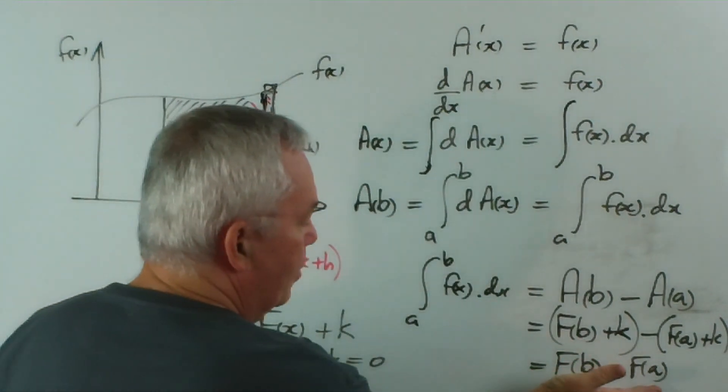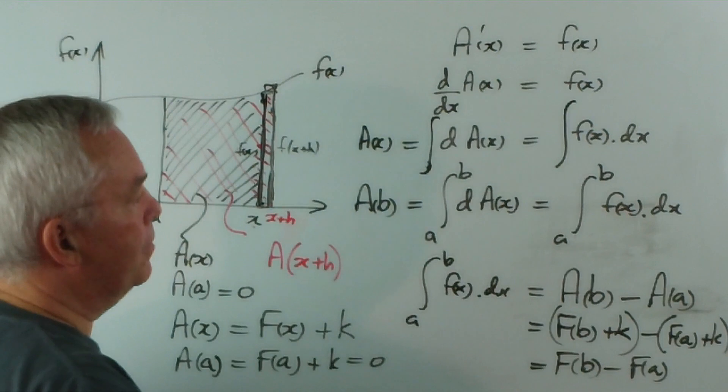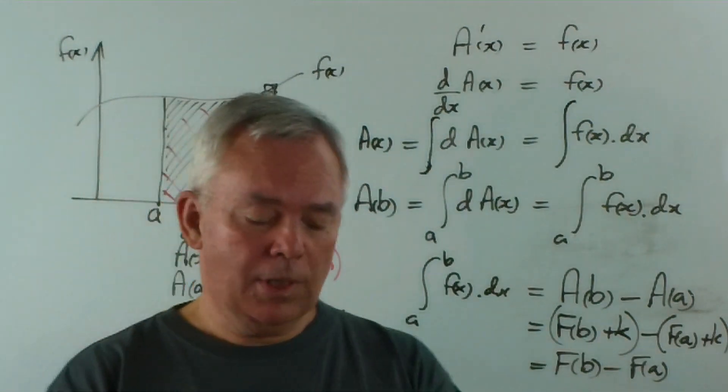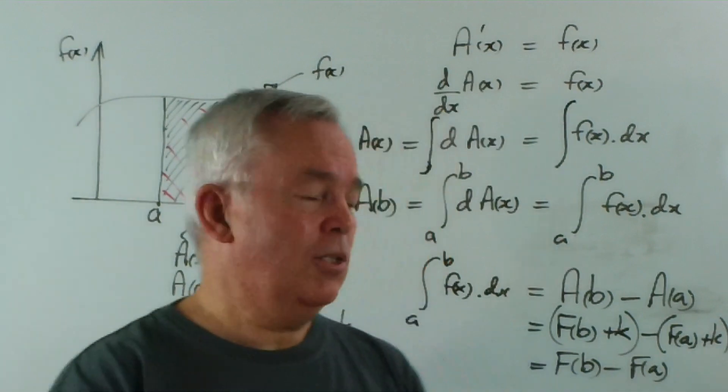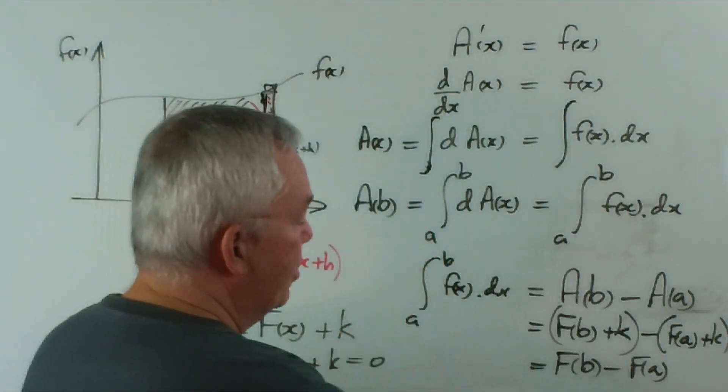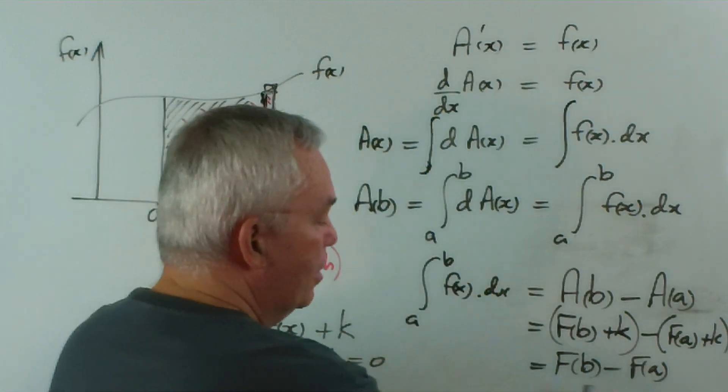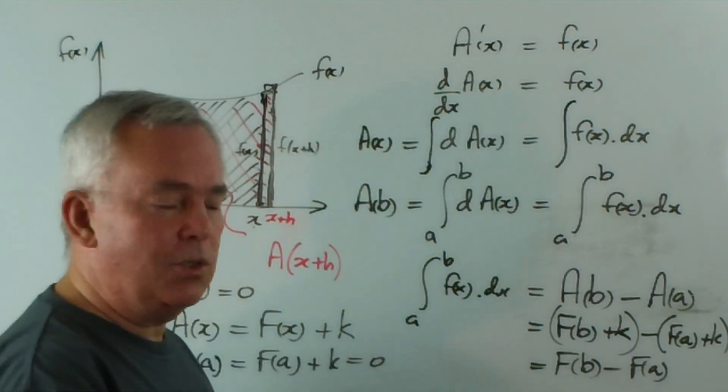A also is an antiderivative, but we're pointing out the fact that the constant makes no difference. So this is the second part of the fundamental theorem of calculus. So it first of all shows that the area is the antiderivative of the function, and it shows that the value for the area is found by substituting the boundaries, or the limits, the boundary values into the primitive function.